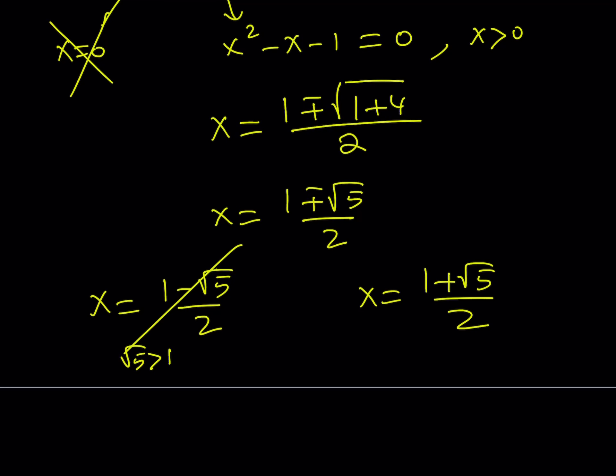Therefore this is a negative quantity. Unfortunately we're not allowed to accept that. So the only solution that is left over is x equals 1 plus root 5 over 2. And that is the golden ratio. You can also use phi as a symbol, so on and so forth.